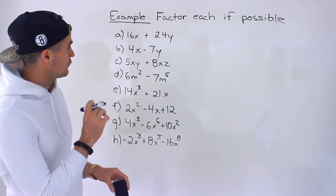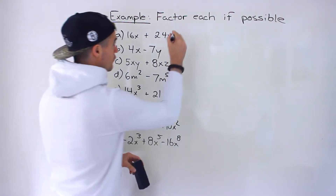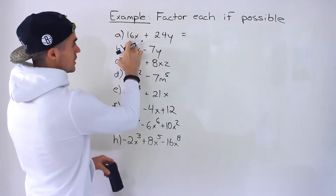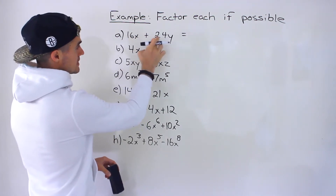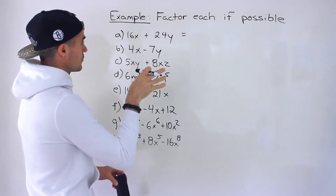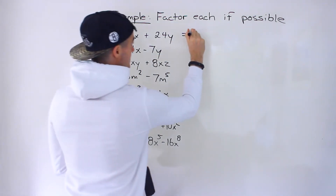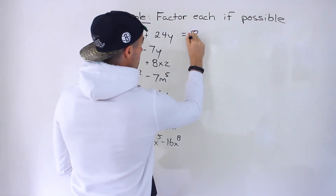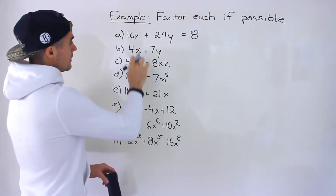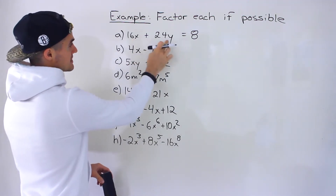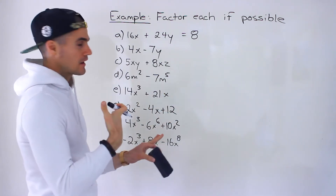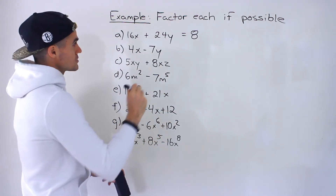We've got 16x plus 24y. Starting with the integers: from 16 and 24, what's the greatest common factor? It's going to be 8 — 8 goes into 16 and 24 smoothly. Notice that x and y are different variables, so we can't take anything out in terms of the variables.